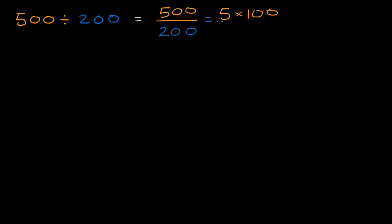five times 100 over two times 100. The reason why that is useful is you say, hey, look, I have 100 in the numerator, I have 100 in the denominator. 100 divided by 100 is just going to be one.